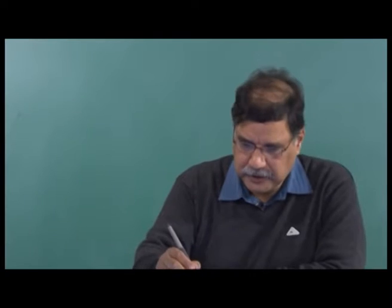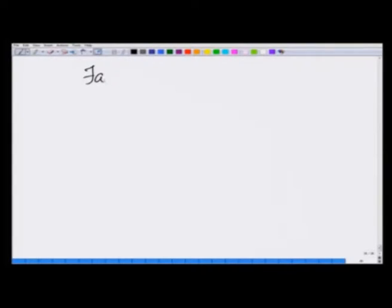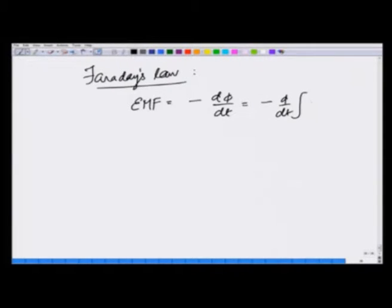We have been discussing Faraday's law and it says that EMF produced in a circuit is equal to minus d phi by dt, which is minus d by dt of B at a point r (B may depend on t) dot dS.